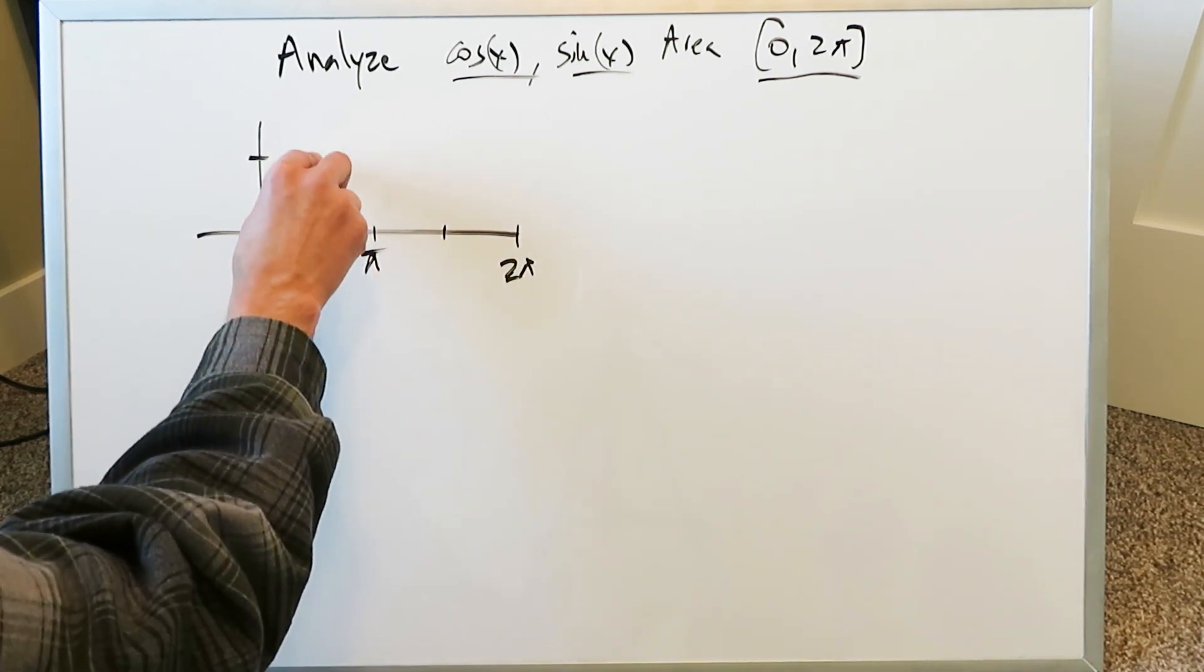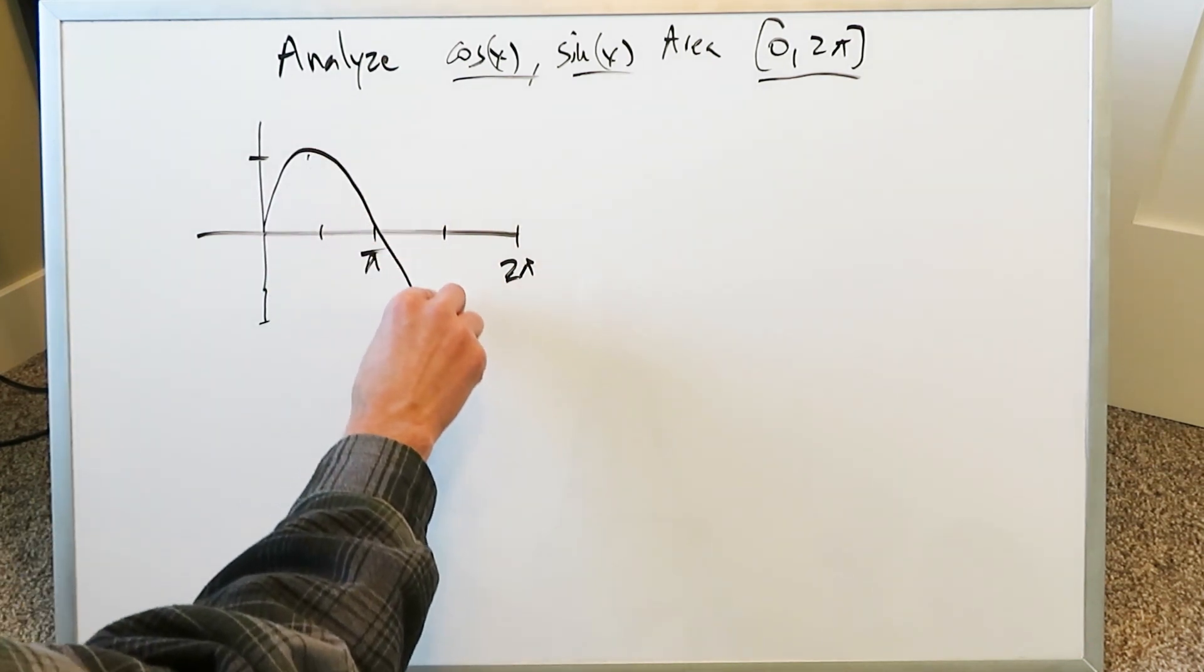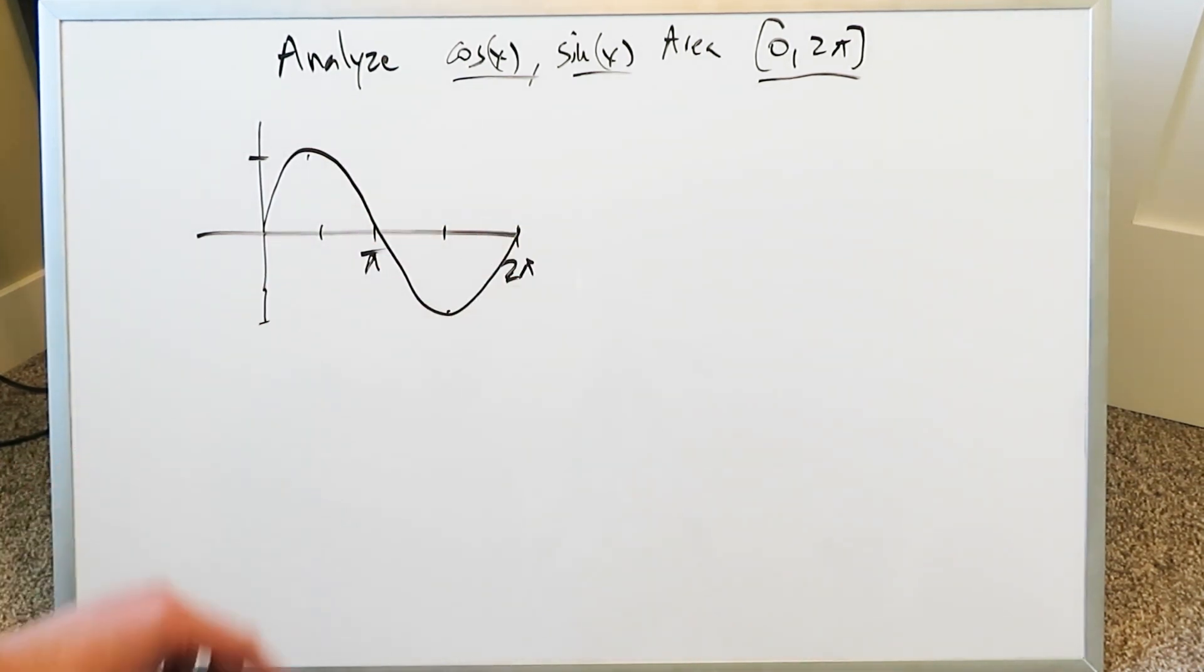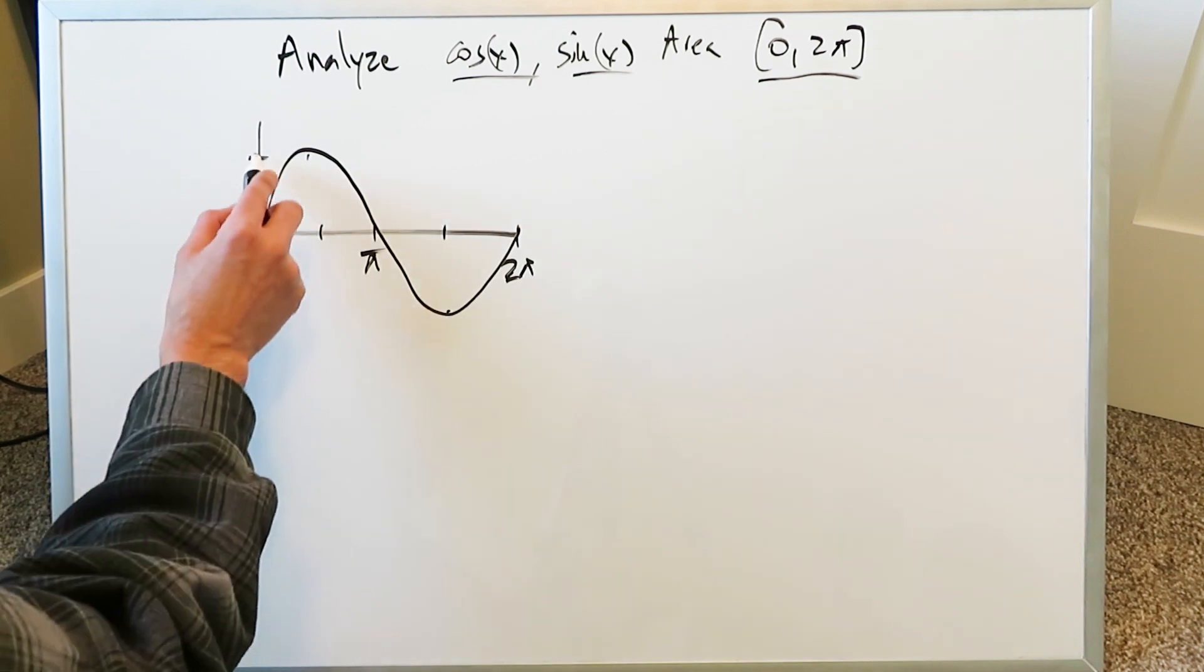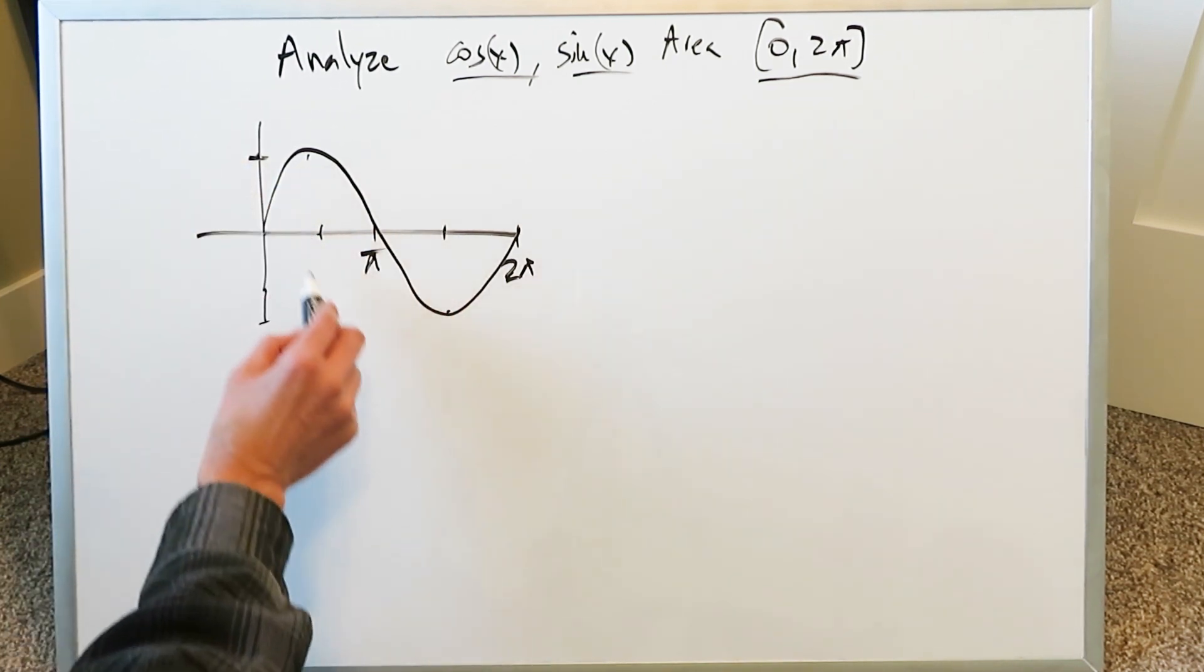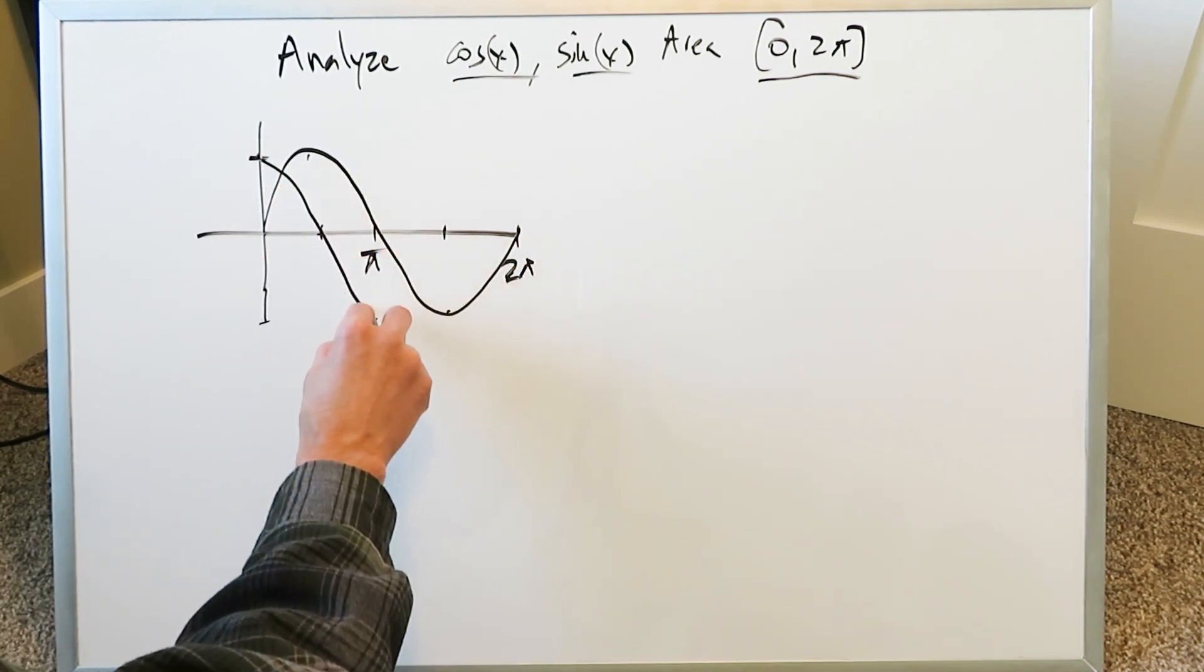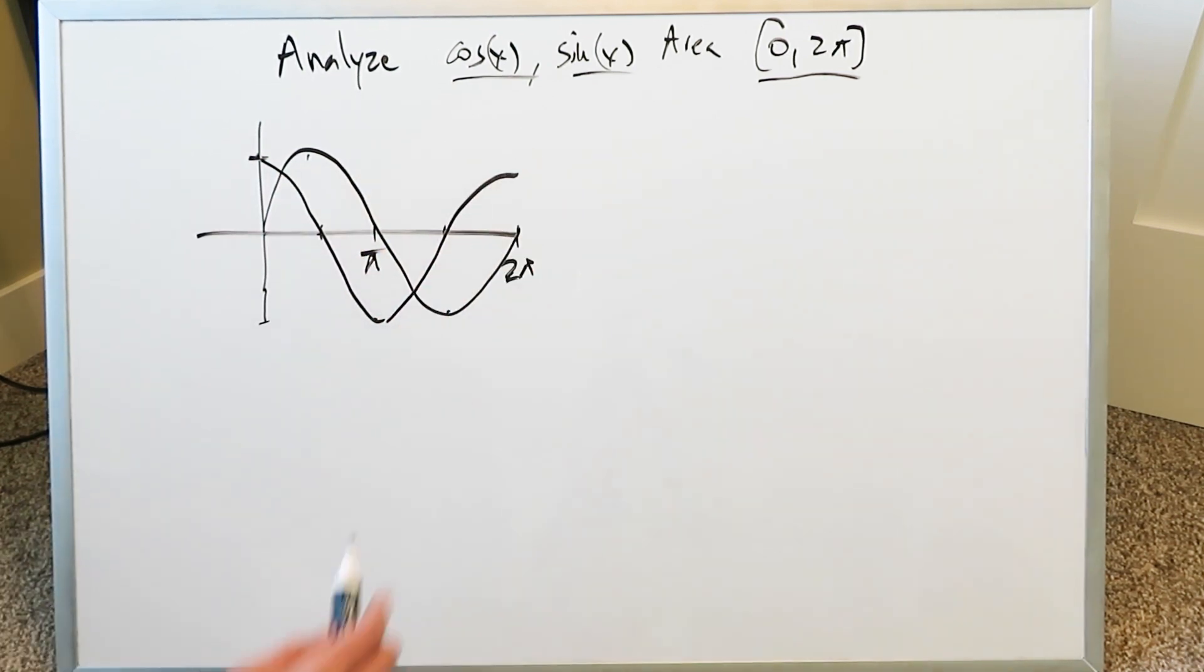The sine curve goes as high as here and looks like this. The cosine starts at (0,1), has x-intercepts at π/2 and 3π/2, and looks like this.